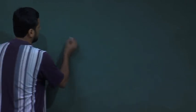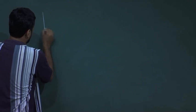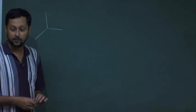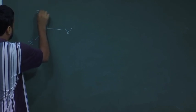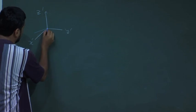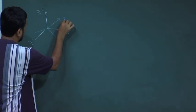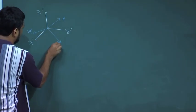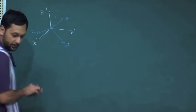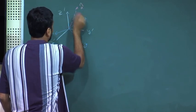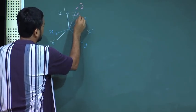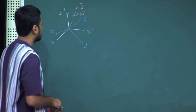Yesterday's class was about moving coordinate systems and we continue on the same line. What we did in the last class is we considered a situation where there are two coordinate frames: one is stationary, which we labeled as x prime, y prime, and z prime, and there is another coordinate system which is moving, called x, y, and z. The movement takes place around an axis given by n-cap, and the instantaneous rotational velocity is omega.